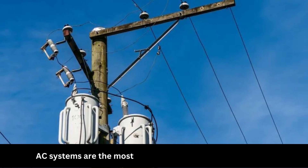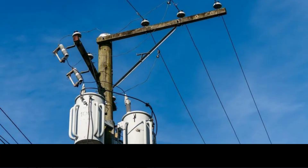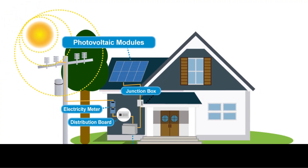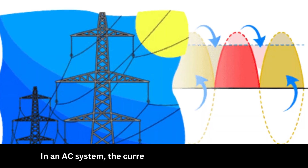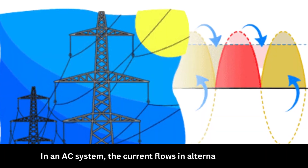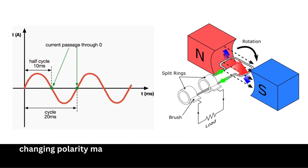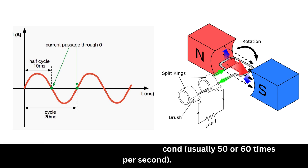Number 1: AC, alternating current systems. AC systems are one of the most common types of electrical systems used in homes, buildings, and industrial applications. In an AC system, the current flows in alternating directions, changing polarity many times per second — usually 50 or 60 times per second.